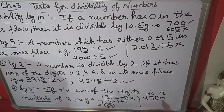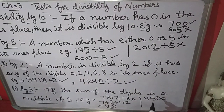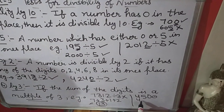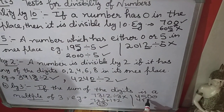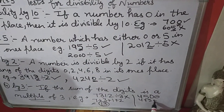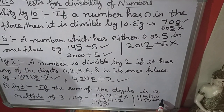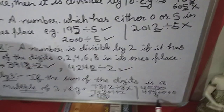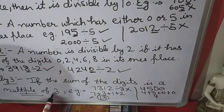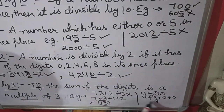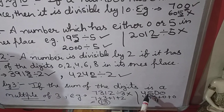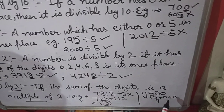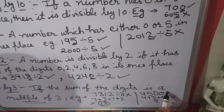Another example: 4,500. Check if it is divisible by 3. We add all digits. The sum will be 9, and 9 is divisible by 3 — it is a multiple of 3. So 4,500 is also divisible by 3.